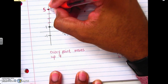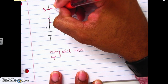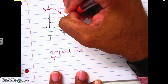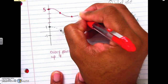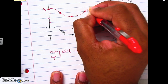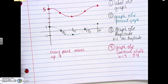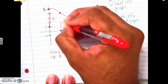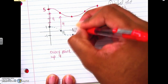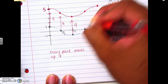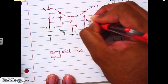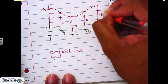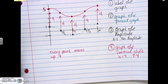Graph it out using the same curve shape. Make sure it's curvy — not sharp edges. Sharp edges mean you're wrong. Everything just moved up four — every single point goes up four — and that's all you have to do.